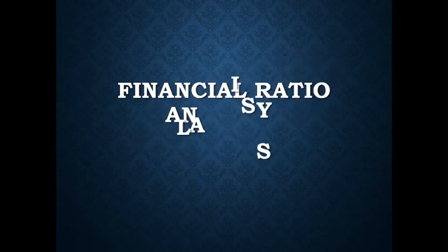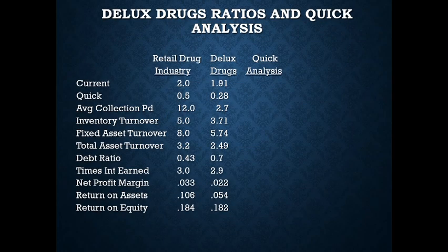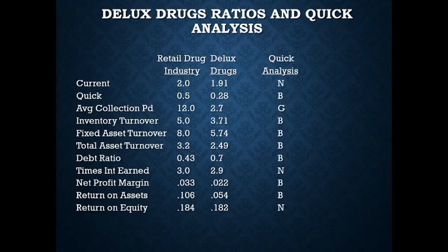What we've done so far with the Deluxe Drugs category write-up — I hope these numbers all match up to yours. These are the Deluxe Drugs ratios from the sample problem in your notes. You have confirmed the Deluxe Drugs ratios in the middle column, calculated the upper and lower ends of the acceptable range for the standard — the average for the retail drug industry — and performed a quick analysis indicating whether each ratio is good, bad, or neutral with respect to the industry average.